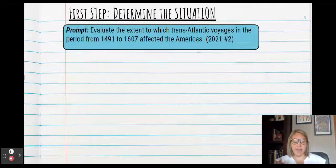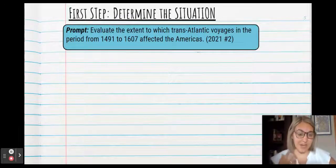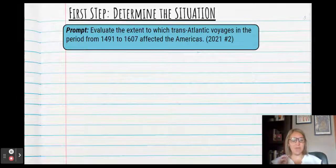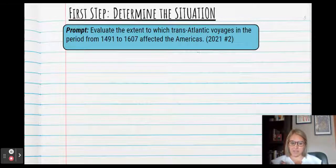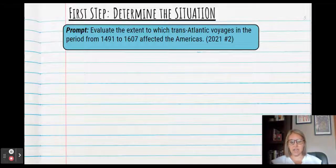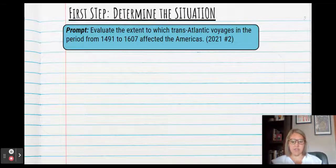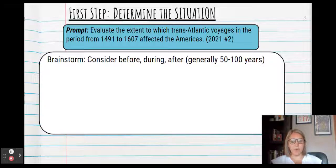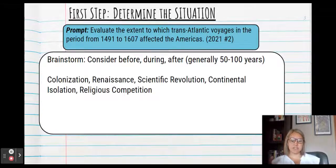So then you continue on, and I'm going to give you a sample prompt here. This prompt is from the APUSH test from 2021. However, the content is relevant to all the AP histories. Evaluate the extent to which transatlantic voyages in the period from 1491 to 1607 affected the Americas. So first you need to brainstorm. Consider before, during, and after this time period. Now you want to generally stick to 50 to 100 years, and as close to 50 years as possible. Really when we're thinking AP US history, it's a tight time frame, and so 50 years is going to be a better time frame than European history or world history that are looking at a wider time span.